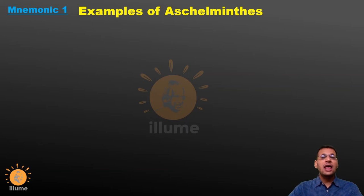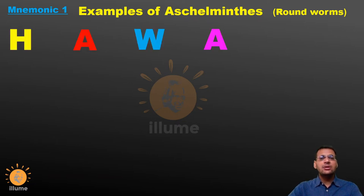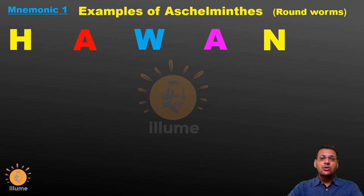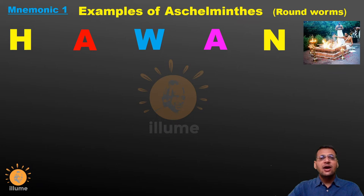The first mnemonic will help us in remembering the examples of Aschelminthes, that is roundworms. Aschelminthes is a phylum in animal kingdom which includes all the roundworms. To remember the examples of Aschelminthes, we need to remember a simple word which means 'havan'. Havan is a ritual performed in India whenever we are going for any opening of a house, inaugurating a shop, or even in marriages. That havan will help us in remembering the examples of Aschelminthes.